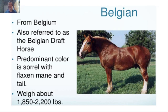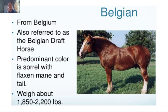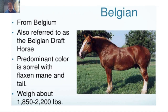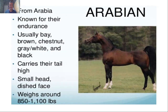Next is the Belgian horse, also referred to as the Belgian Draft horse — one of the European breeds. As you can see, they are quite muscular. The predominant color is sorrel with flaxen mane. They are an example of a cold-blooded horse used for draft work — pulling plows. They are notably heavier, weighing around 1,800 to 2,000 pounds, almost double compared to warm-blooded breeds.